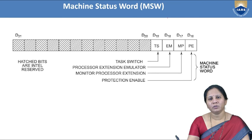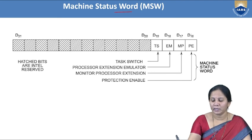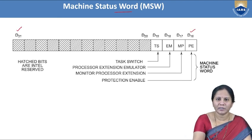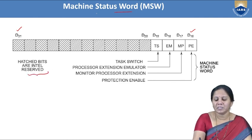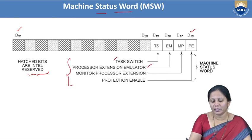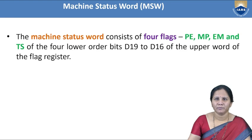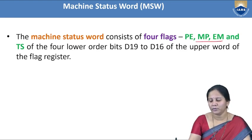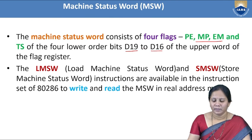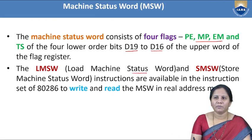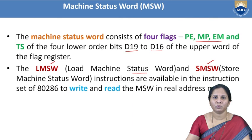The flag register extends from D0 to D15 (the status word). From D16 to D31 is the Machine Status Word (MSW), which consists of four bits: Protection Enable (PE), Monitor Processor Extension (MP), Emulate Processor Extension (EM), and Task Switch (TS). Instructions like Load Machine Status Word and Store Machine Status Word are available in the 80286 instruction set to access the MSW.